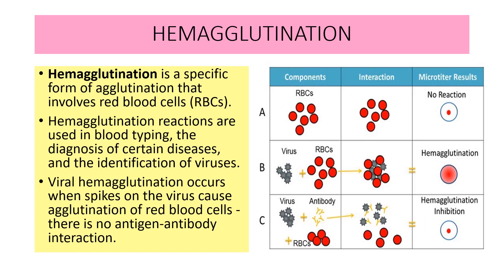In the third case, the viruses are mixed with antibody as well as RBCs. In that case, the antibodies block the viruses, causing neutralization of the viruses, and as a result the viruses will not cause agglutination. That process is known as agglutination inhibition — no agglutination occurs.